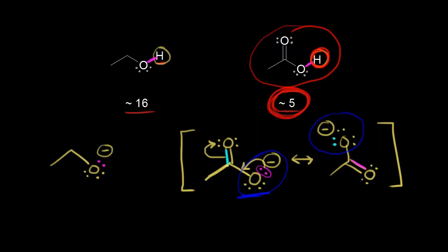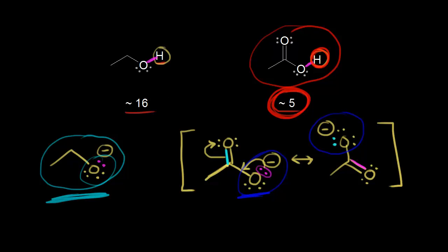If we compare that to the conjugate base for ethanol — this is called the ethoxide anion — we can't draw a resonance structure. We can't delocalize that negative charge. That negative charge is stuck on this one oxygen here, and that means this conjugate base is not as stable. It's not stabilized by resonance, so that means ethanol is not as likely to donate its proton. And that's why we see a higher pKa value for ethanol. So when you're trying to figure out the more acidic proton, draw the conjugate base and look for resonance.